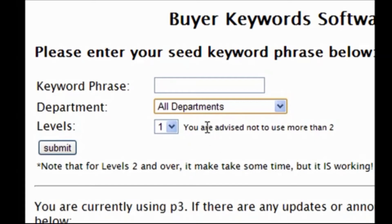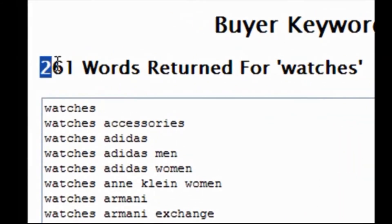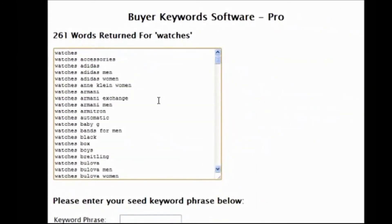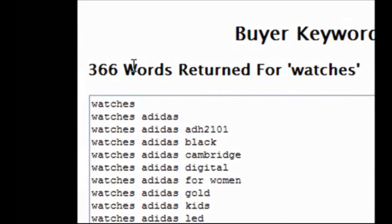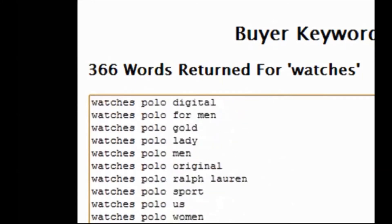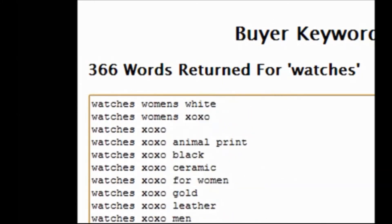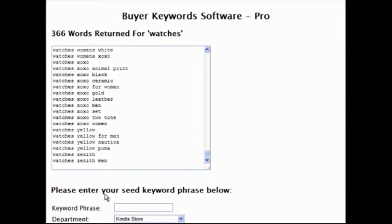So what do I mean by levels? If I choose 'watches' in all departments and choose one level, that gives us 261 keywords which are buying keywords. However, if I choose two levels deep, it takes each of those keywords and goes through them by adding a letter of the alphabet. For example, it takes 'watches adidas' and automatically gives you all keyword phrases for that. Going two levels deep for 'watches' returns a total of 366 keywords — a huge list of buying keywords. You can use any keyword or keyword phrase, and with the pro version you can choose any department.